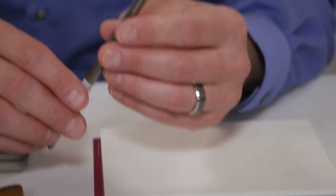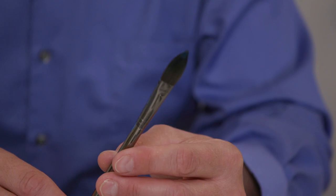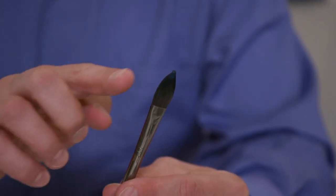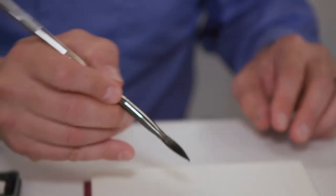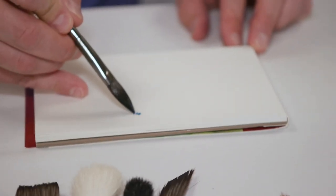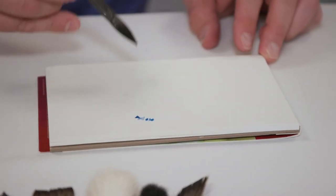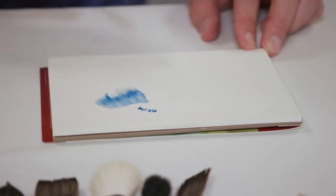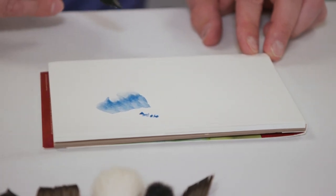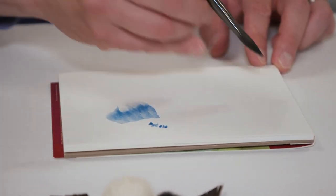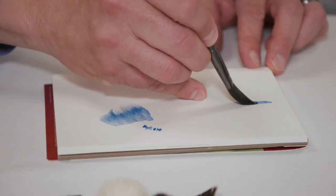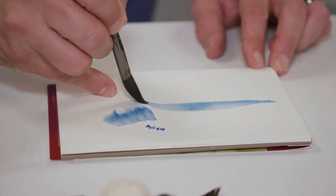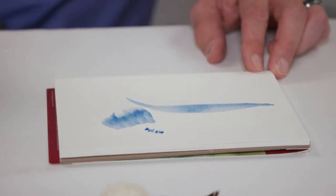The next brush that I want to show you is our cat's tongue brush. A lot of people confuse this with the filbert, but it comes to more of a point. The advantage of this brush is you can paint small areas and do details with it, but if you've got larger areas, you can also utilize the full body of that brush. You can create unique strokes with this brush by pressing, pulling, and lifting to get those types of features.